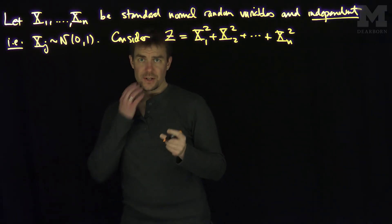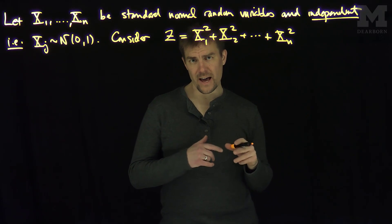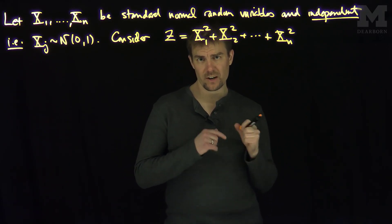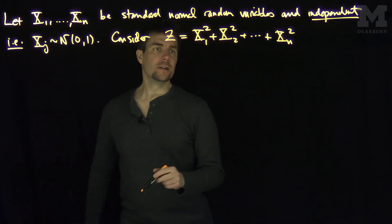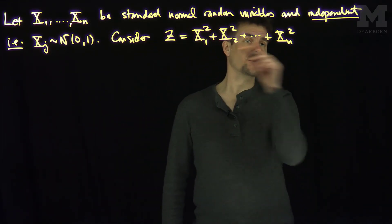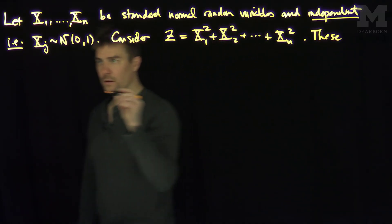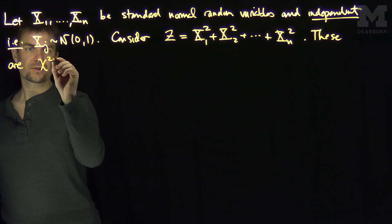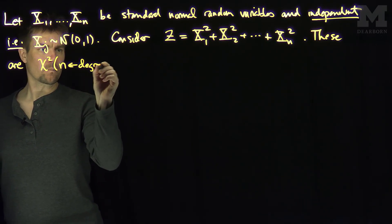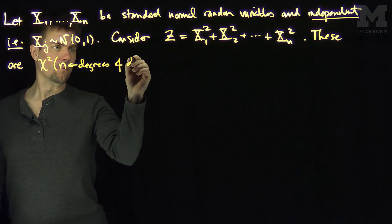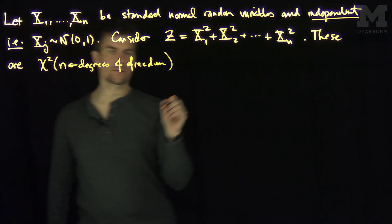So this function, this random variable z, is the sum of squares of n normally distributed random variables with mean 0 and standard deviation 1. These types of variables have a distribution, these are chi-squared with n degrees of freedom random variables.